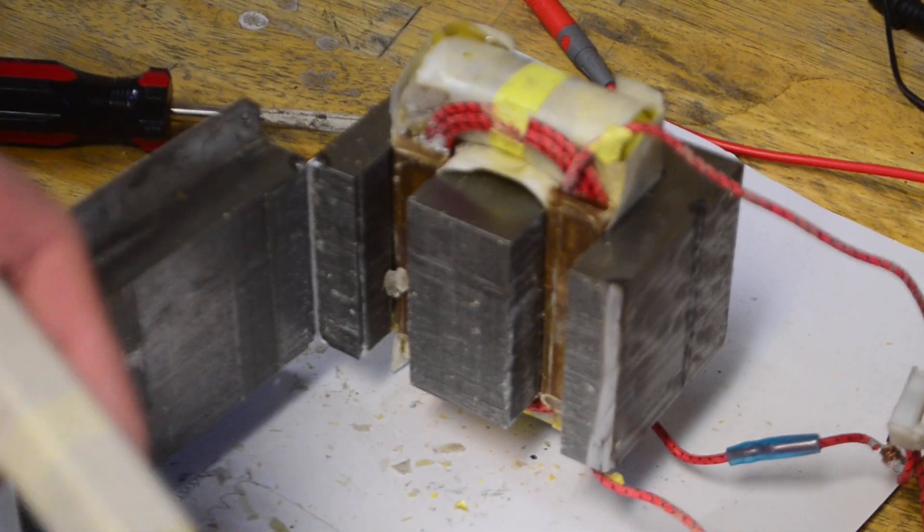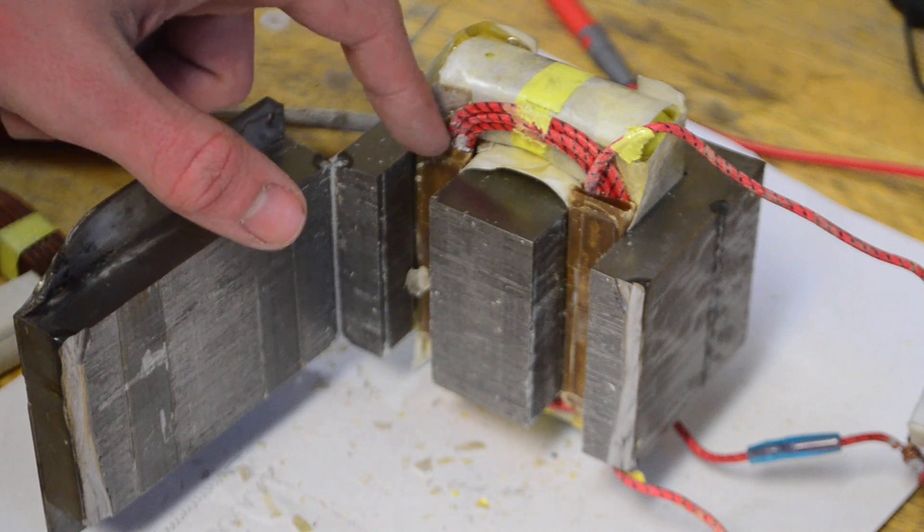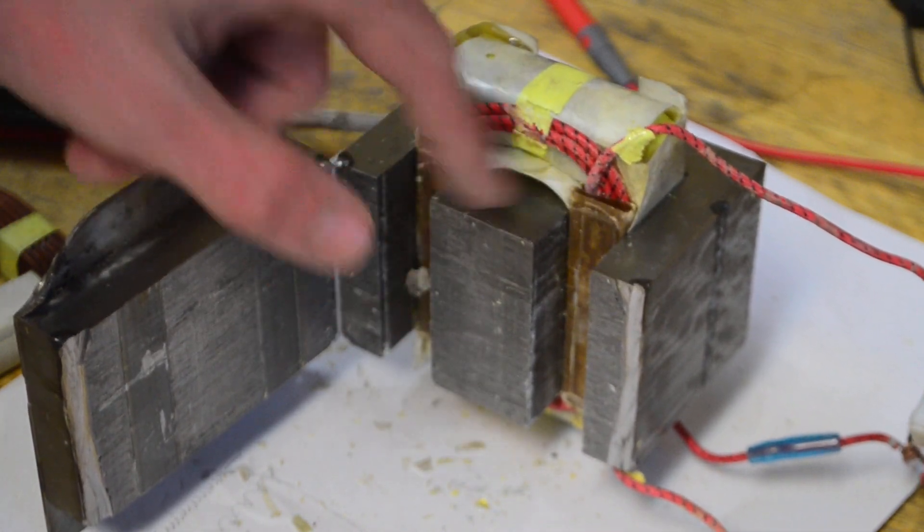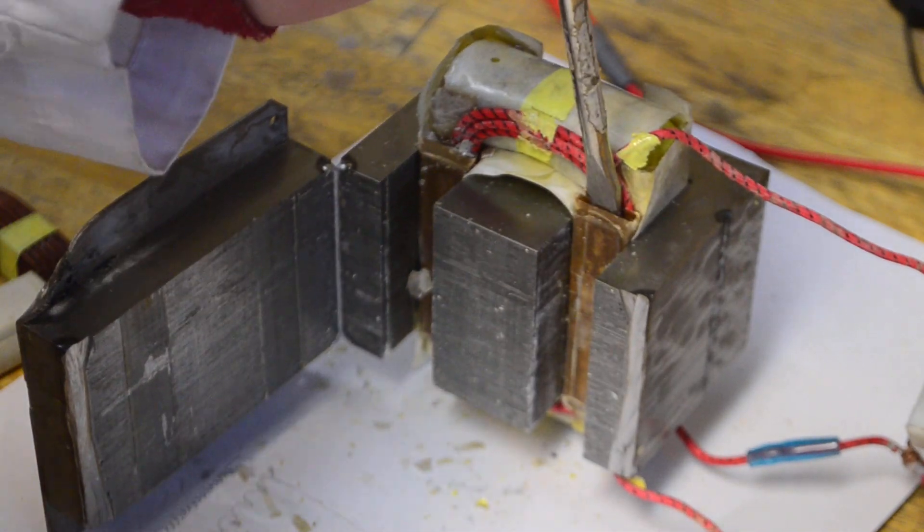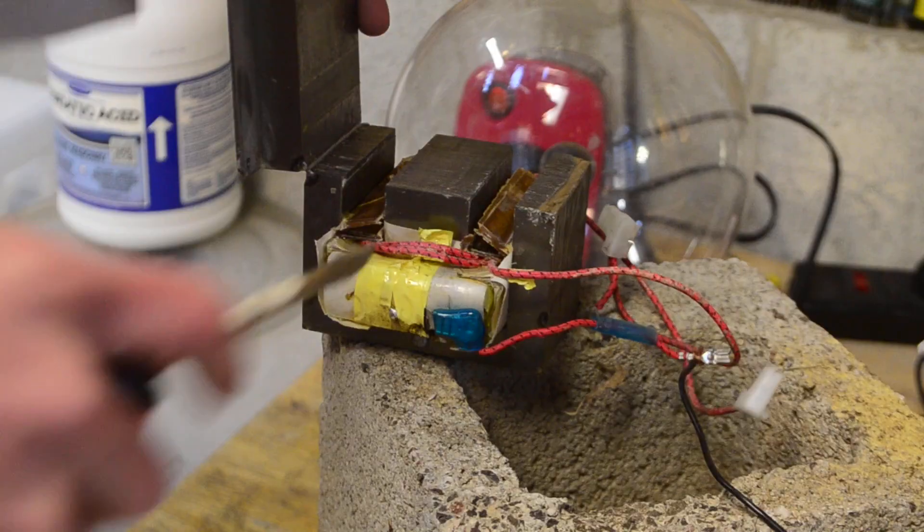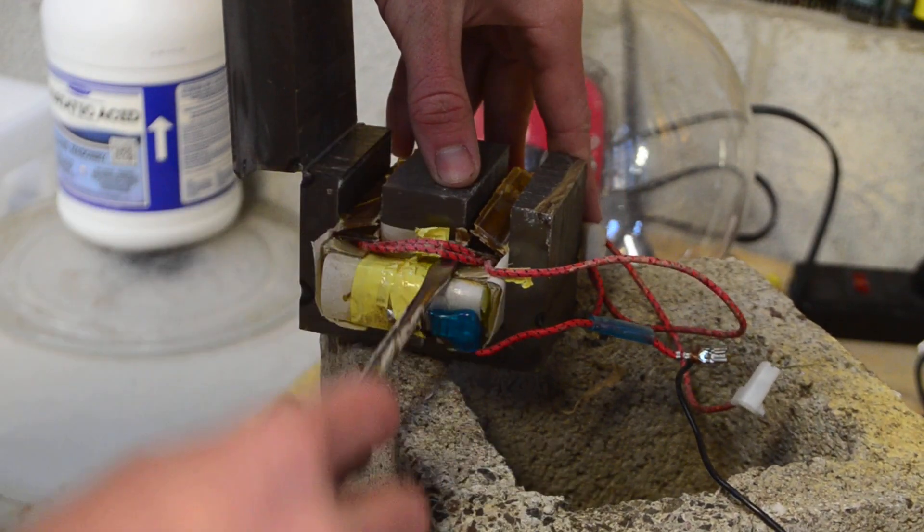And now we have the transformer's primary coil free from the transformer. The next thing we're going to want to do is knock out these magnetic shunts inside the transformer, so in order to do that I'm going to put a screwdriver on it like this and whack it with a mallet.